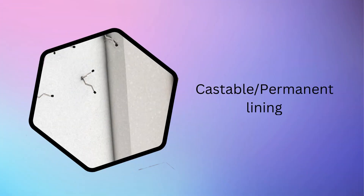A question may arise in your mind: why is it called permanent lining? It's because this castable lining is not changed for a long time. This lining can go for 800 to 1000 heats, and even more in some steel plants, depending on the casting time and sequence length.